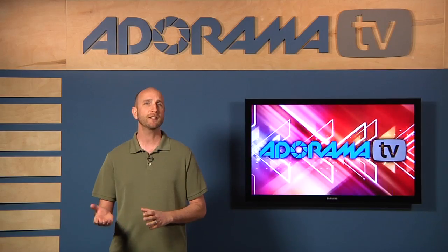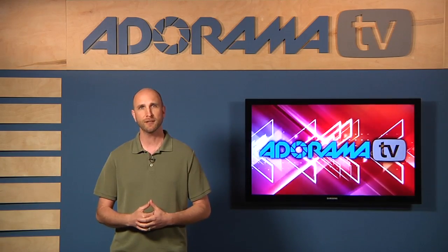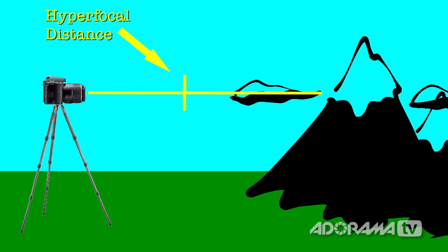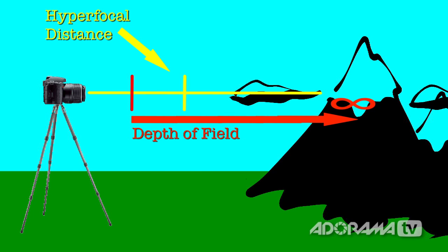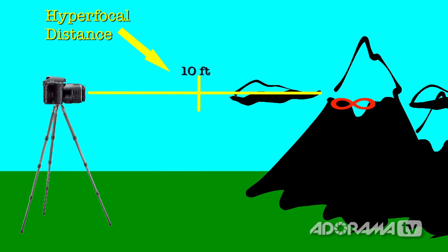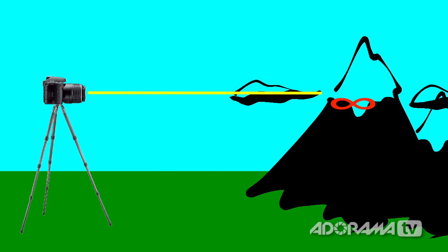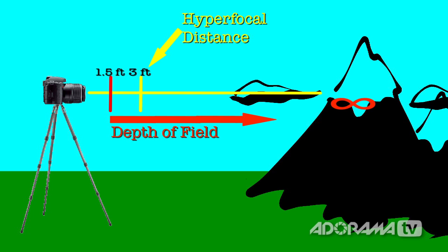Before we get too far into this, let's take a closer look at the definition of hyperfocal distance. When you focus your lens at the hyperfocal distance, the depth of field extends from half the hyperfocal distance to infinity. If our hyperfocal distance was 10 feet, we'd focus our lens at 10 feet, and our depth of field would extend from 5 feet — half the hyperfocal distance — all the way to infinity. If our hyperfocal distance was 3 feet, we'd focus our lens at 3 feet, and our depth of field would extend from 1.5 feet all the way to infinity.